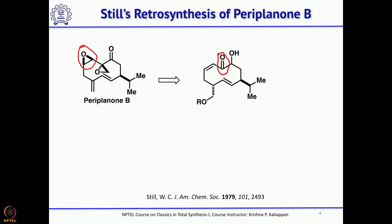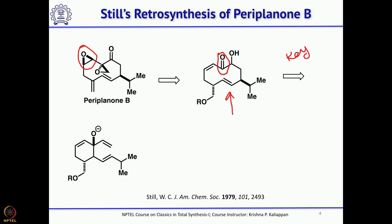For this particular cyclodecanone, his idea was that it can be made using anionic oxy-Cope rearrangement. The key reaction — anionic oxy-Cope rearrangement — when performed, will give an enolate intermediate. If you then add MCPBA, you will get the corresponding alpha-hydroxy ketone. That is called Rubottom oxidation. So a combination of anionic oxy-Cope followed by Rubottom oxidation gives the alpha-hydroxy ketone.